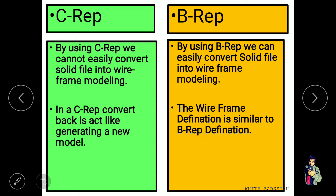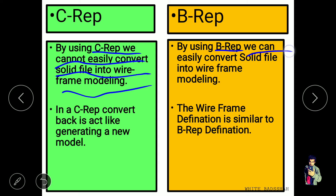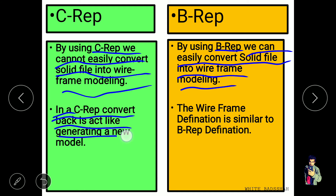By using CSG, we cannot easily convert the solid file into wireframe modeling. But with B-Rep, we can easily convert the solid file into wireframe modeling. In CSG, converting back to wireframe is like generating a new model, because wireframe modeling differs from CSG construction. The wireframe definition is similar to the B-Rep definition — their construction methods are mainly the same, so we can easily convert B-Rep primitives into wireframe modeling. These are the main differences between CSG and B-Rep.